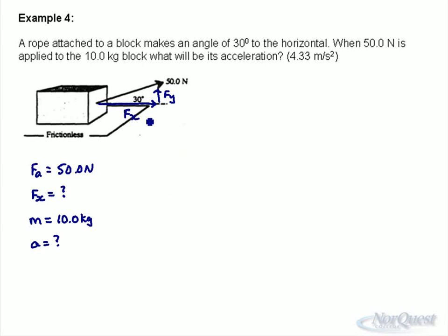So if we want the x component, then what we're going to look for is cosine 30 degrees is going to equal to the x component over the force that's applied at the angle, 50.0 newtons.